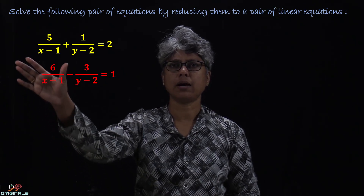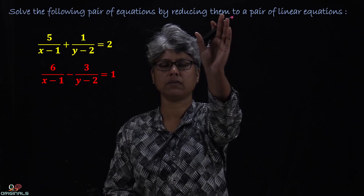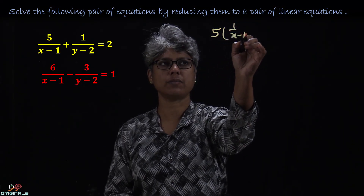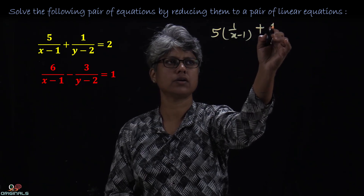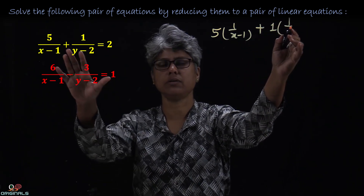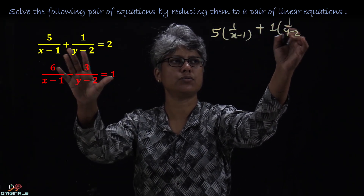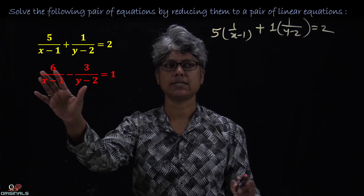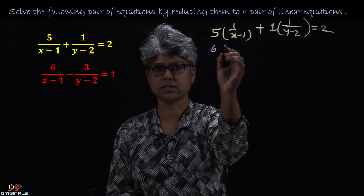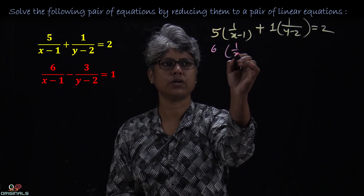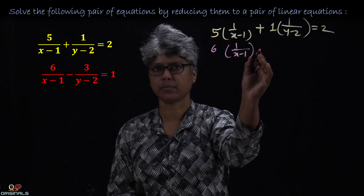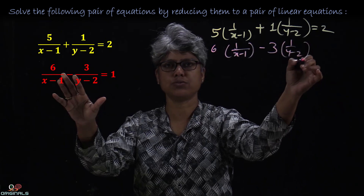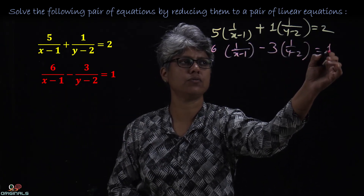If we observe this equation, we can write it in this way: 5 into 1 upon (x minus 1) plus 1 into 1 upon (y minus 2) is equal to 2. The second equation: 6 into 1 upon (x minus 1) minus 3 into 1 upon (y minus 2) is equal to 1.